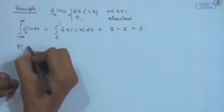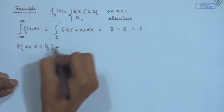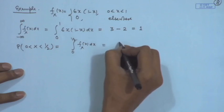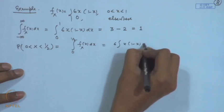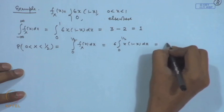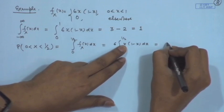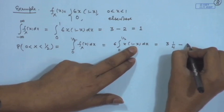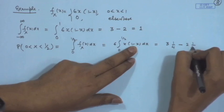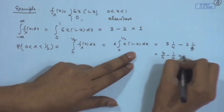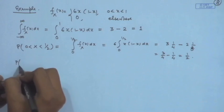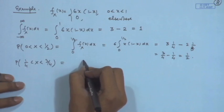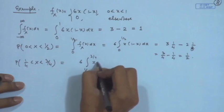Suppose we want P(0 < X < 1/2). We integrate: ∫₀^(1/2) 6x(1−x)dx = [3x² − 2x³]₀^(1/2) = 3/4 − 2/8 = 3/4 − 1/4 = 1/2. Suppose we want P(1/4 < X < 3/4). Then we integrate 6x(1−x) from 1/4 to 3/4, which can be evaluated similarly.